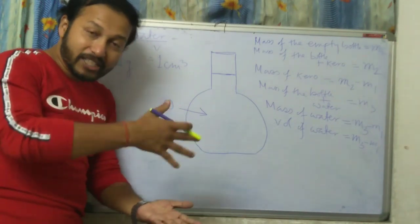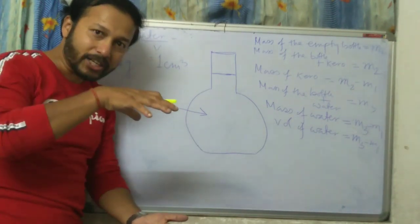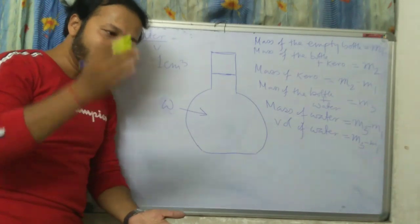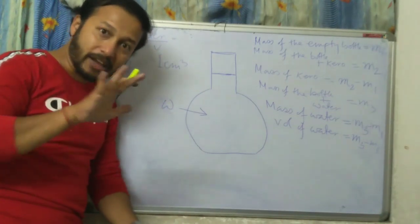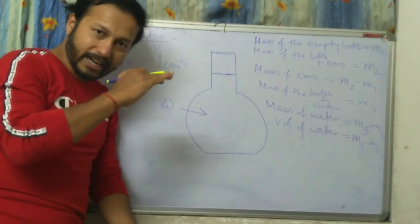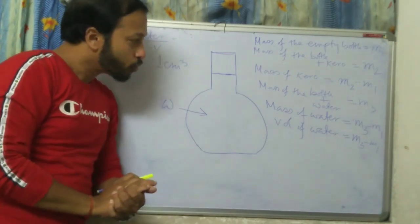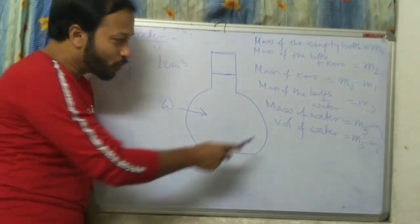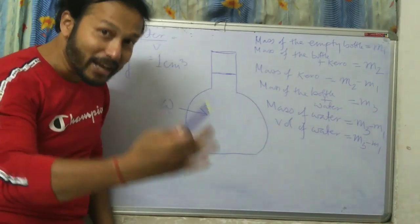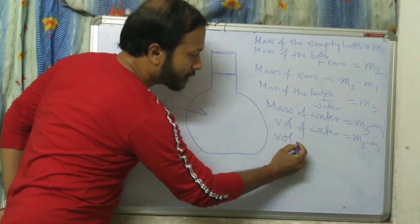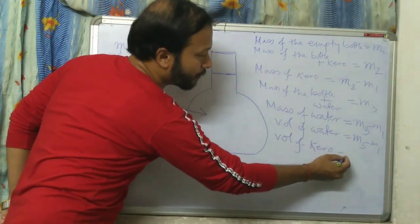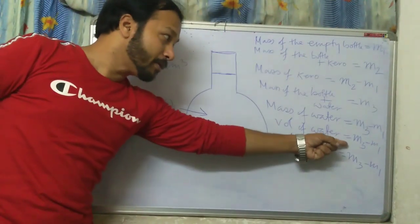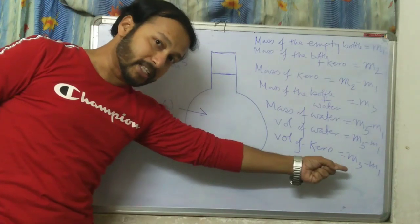When you finish the Pepsi and pour water into the same bottle, the volume of water is also 2 liters. Volume does not change for a container — it is fixed. Therefore the volume of kerosene equals the volume of water, which is M3 minus M1.